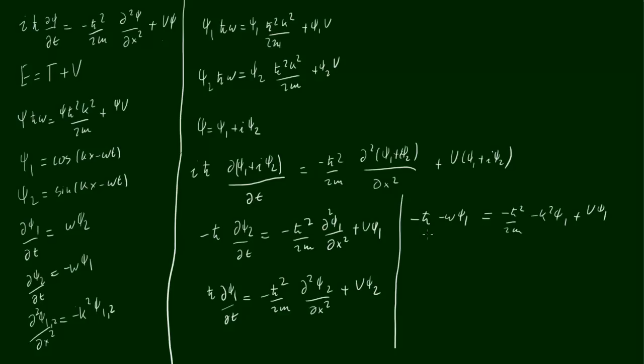Oh, actually, we'll just simplify this right now. The two minuses cancel, so that's ℏωψ₁. The minuses here cancel as well, so that's ψ₁ℏ²k² over 2m plus Vψ₁.